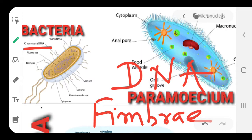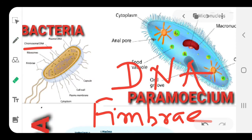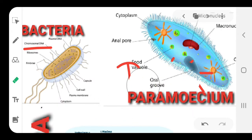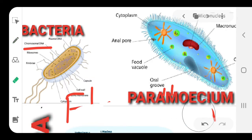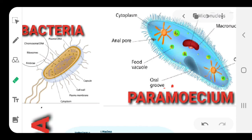At the end of the bacterium there is a long hair-like growth, and this is referred to as flagellum — F-L-A-G-E-L-L-U-M. So the various parts of the bacterium are: capsule, cell wall, plasma membrane, cytoplasm, chromosomal DNA, ribosomes, fimbriae, and flagellum. Draw it from the diagram here.